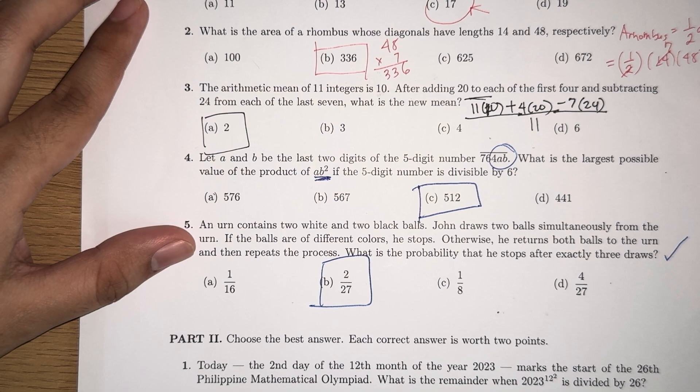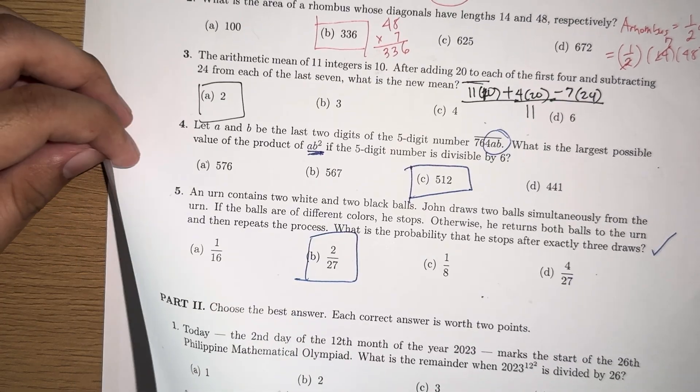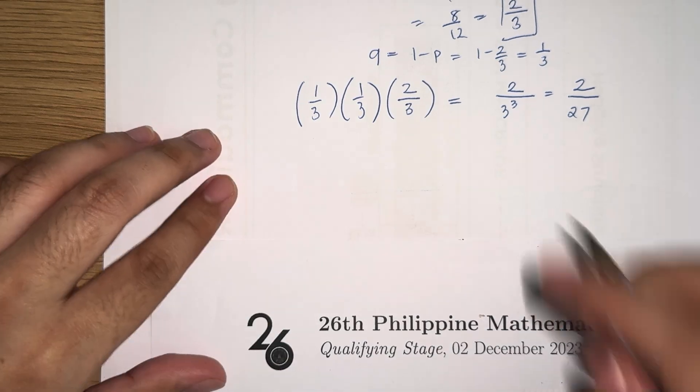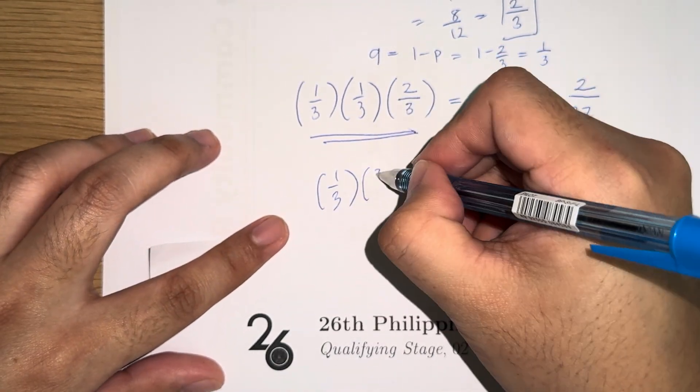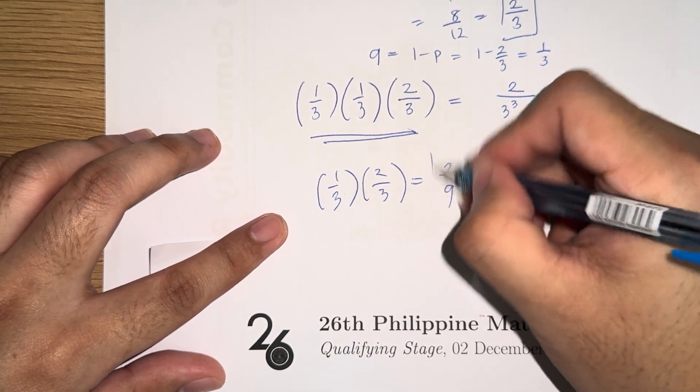What if the question is, what is the probability that he will win after exactly two draws? So we will just change this one as one-third, losing in the first round, and winning on the second round, which is two over nine.